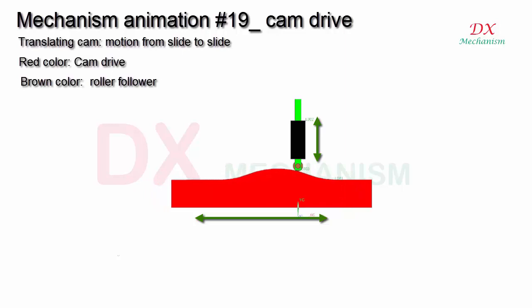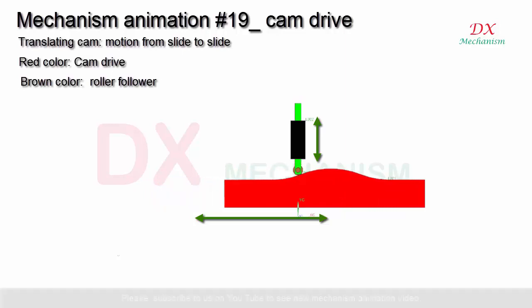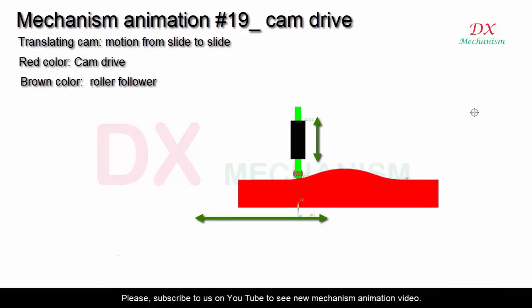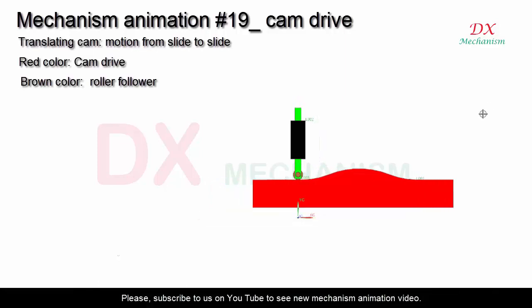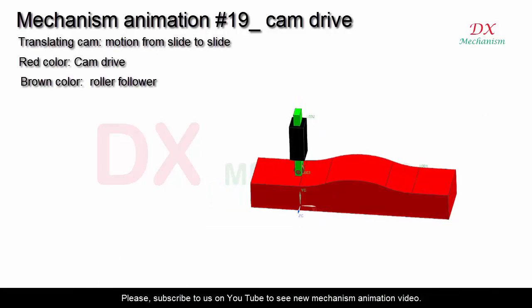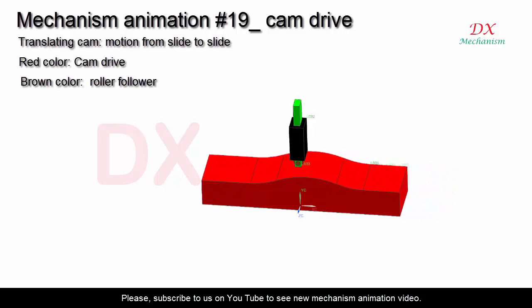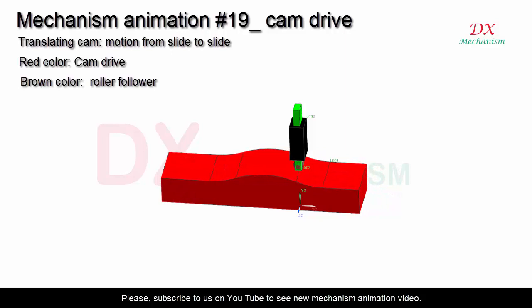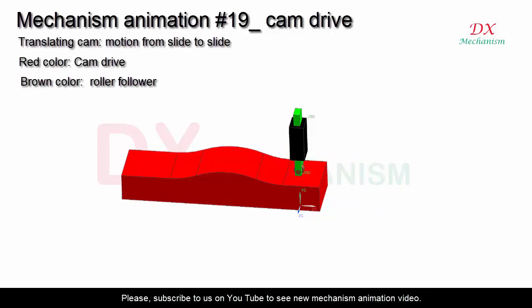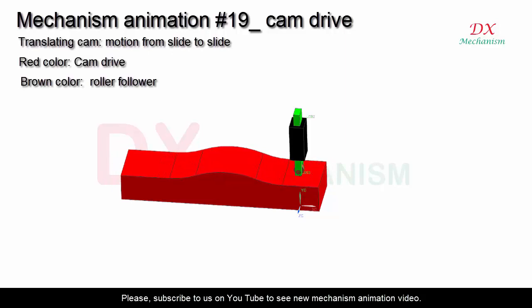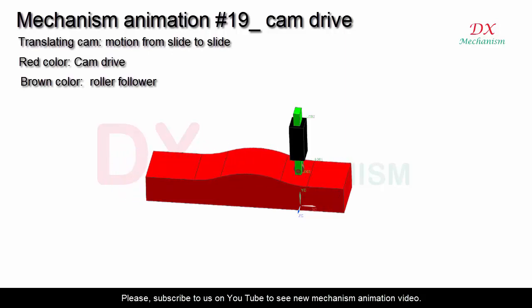Roller follower either tracks the reciprocating motion of the cam profile, or is driven back.